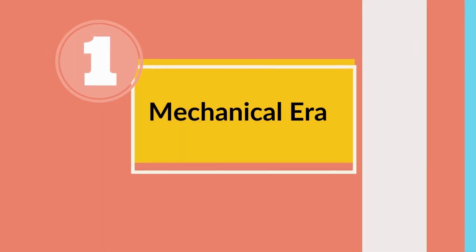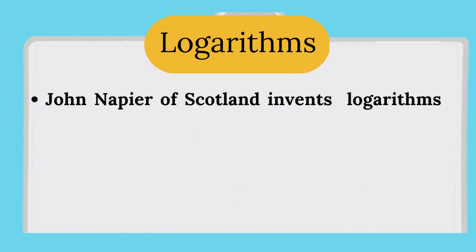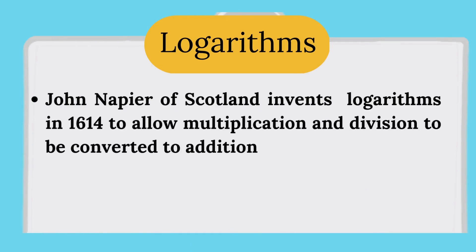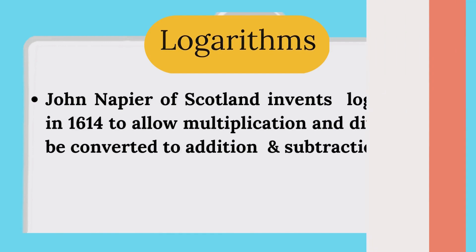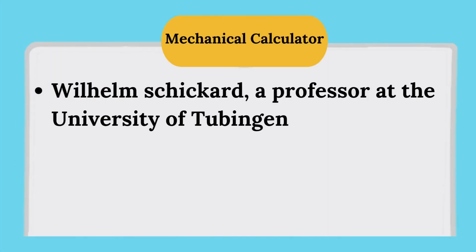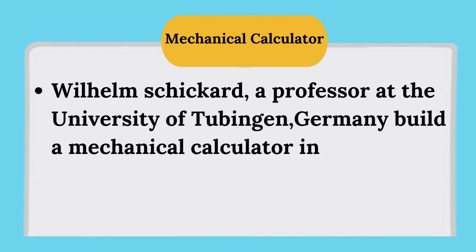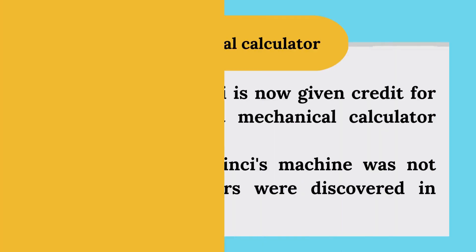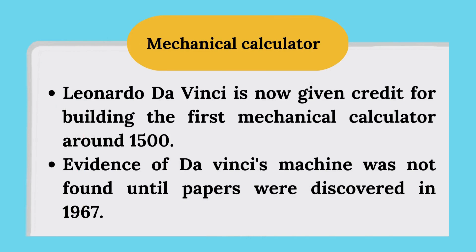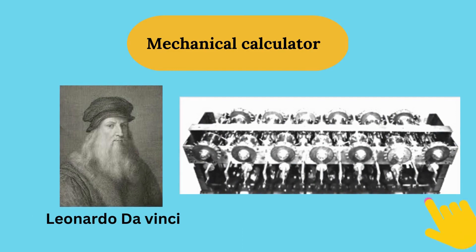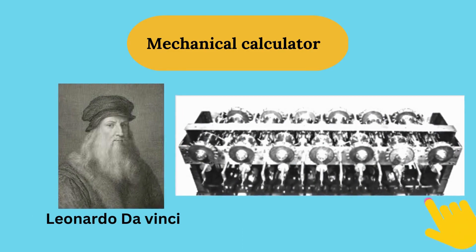In the mechanical era, John Napier of Scotland invented logarithms in 1614 to allow multiplication and division to be converted to addition and subtraction. William Schickard, a professor at the University of Tübingen, Germany, built a mechanical calculator in 1623 with a six-digit capacity. Leonardo da Vinci is now given credit for building the first mechanical calculator around 1500; evidence of da Vinci's machine was not found until papers were discovered in 1967.